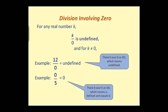Let's take a look at division involving 0. For any real number k, k divided by 0 is undefined. For example, 12 divided by 0 is undefined. The way to remember this: think of k over 0, or 'KO' — if you know anything about boxing or mixed martial arts, think 'undefined' when you see KO. On the second example, 0 over 5 is 0 over k, or 'OK' — which means we can perform this division. It is defined and it equals 0.